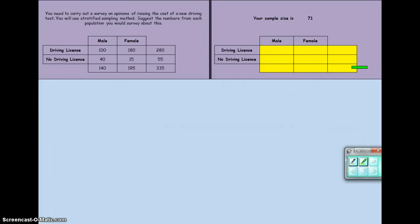Now we have here a total population of 335, and we can see that from our two-way table. But our sample size, we only want to be 71 people. So to ensure that we keep the population in proportion, we first of all must work out what fraction of each part of our population that we have.